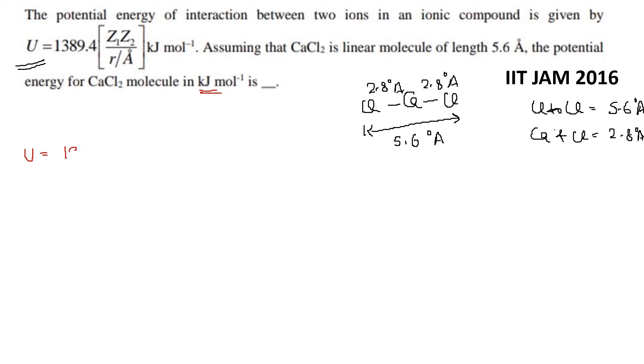Is equal to 1389.4, so here we can write this - first we can see calcium and chloride. We have this molecule chloride and calcium, so chloride charge is minus 1, calcium charge is plus 2, divided by r. Calcium and chloride distance is equal to 2.8. Plus second case, this is calcium and this is chloride. So here calcium charge is equal to 2, chloride charge is minus 1, distance is 2.8.